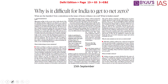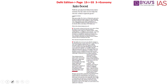The next article asks: Why is it difficult for India to get to net zero? This article has been explained on the 15th of September, so kindly look into it. The following article is about auto boost — the Production Linked Incentive scheme for the auto sector — which has been explained in a daily quiz session as part of the fact of the day.